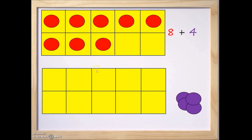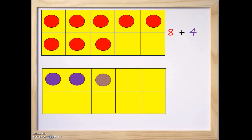Now we're going to move to the second frame. We'll take the purple ones and go 1, 2, 3, and 4. So this is basically a visual representation of our problem: 8 plus 4.